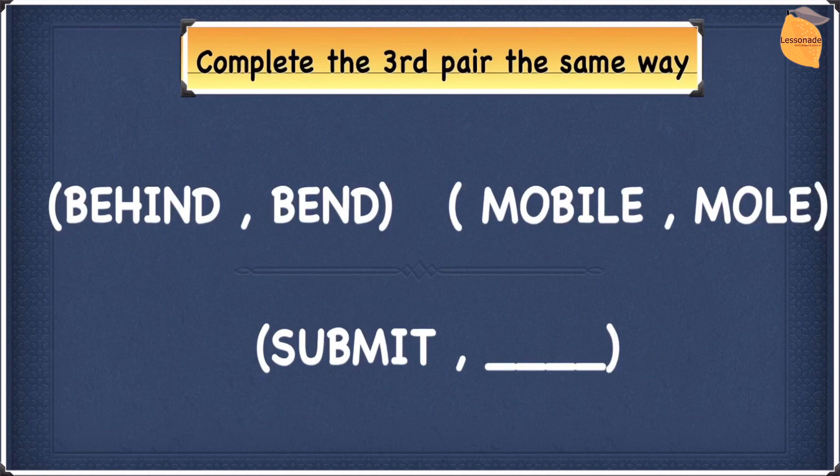Let's look at this complete the third pair in the same way example. In this question, we can see there are three pairs of words, and we will have to find the third pair in the same way as we find the first two. In other words, the word BEND is made from certain letters from BEHIND. The word MOLE is made from certain letters from MOBILE. And our answer will be made from certain letters from SUBMIT.